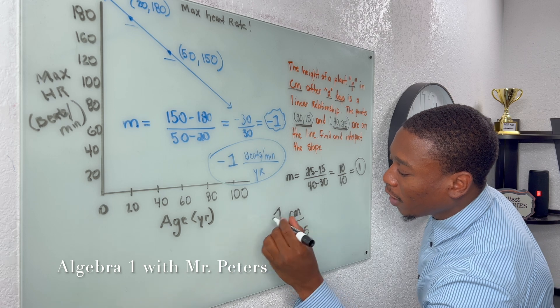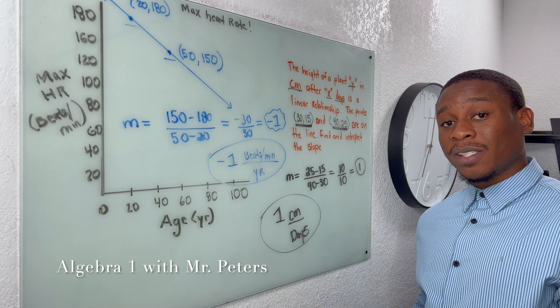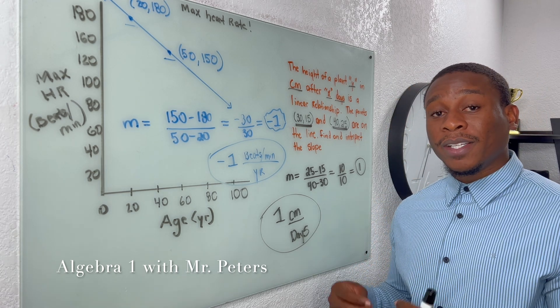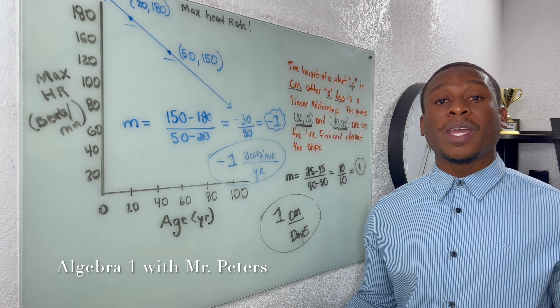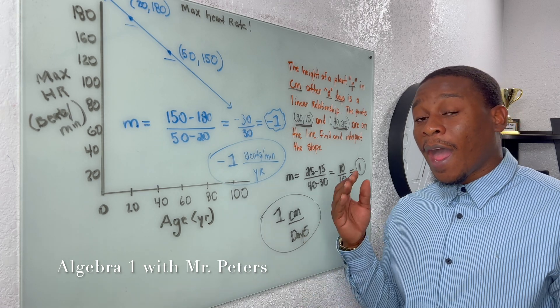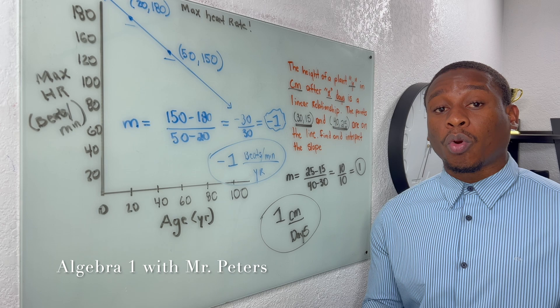So what this means is that for every day that passes, we should anticipate that the plant is going to grow by one centimeter. So this is what we mean, guys, when we talk about interpreting the slope from a graph or a word problem. What does that answer represent in the real world context?